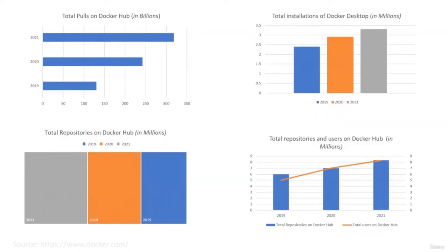Here I am going to present some more graphs and figures taken from Docker.com over three years. In all the figures, there is always an upward trend, whether we are talking about total number of pulls in Docker Hub, total installation of Docker Desktop, or the number of users and repositories in Docker Hub — all are increasing over time. This signifies the demand for Docker, and companies are adopting this technology and looking for Docker professionals. Docker is a hot topic in the IT sector and having this skill will be very helpful for your career path.